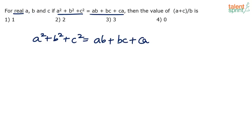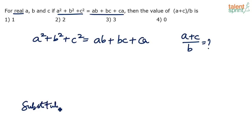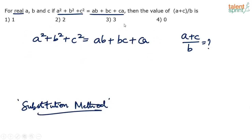So what is the value of (A plus C) divided by B? Now instead of trying to recall all those identities and formulas that we have learned in algebra and then sorting it out, I think it's better to substitute some values. The smart method we're talking about is the substitution method. In this method, we substitute random values for A, B, and C satisfying the given condition.